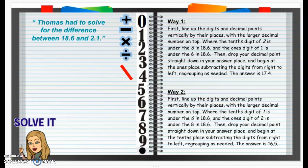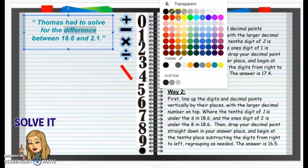Thomas had to solve for the difference between 18 and 6 tenths and 2 and 1 tenths. So we have Way 1 and Way 2. First, let's solve what Thomas had to do and then check which way would be correct to explain it. So first, we need to figure out what does that word 'difference' mean?